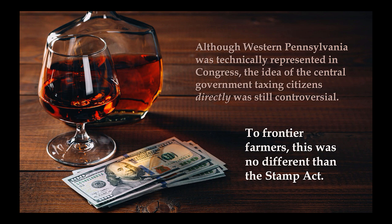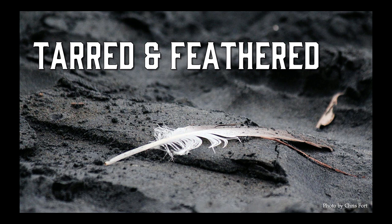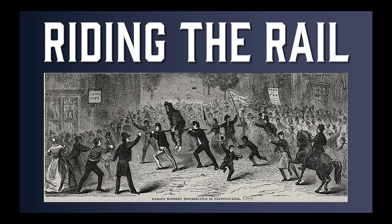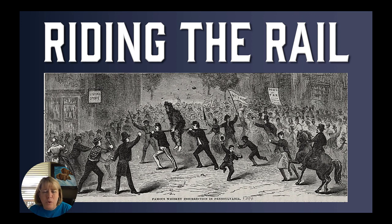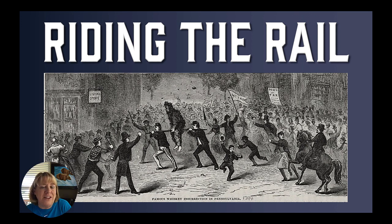For the farmers, this was really no different than the Stamp Act — a tax they didn't agree to, forced upon them. So they pulled out the playbook from the past: they started tarring and feathering tax collectors and protesting. One method was called 'Riding the Rail,' where they'd tar and feather the tax collector, set him on a fence rail, and parade him through the streets. That's what they had done to English tax collectors in the 1760s, and it got the Stamp Act repealed — so it should work here too.